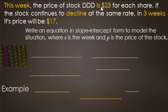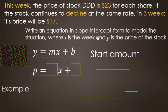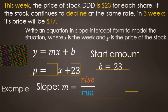This week the price of a certain stock is $23 per share and it's declining at a constant rate. In three weeks the price will be $17. We do have a start amount and we're going to find the rate or slope, so we use slope-intercept form. The start amount is the y-intercept. We'll use P for price of the stock as the dependent variable and x for the number of weeks. The start amount — b — is $23 this week, so 23 replaces b. Next up: finding the rate or slope, still rise over run.